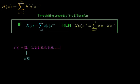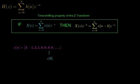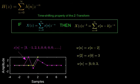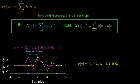Let's begin with the signal x of n in which x of 0 is 3, x of 1 is minus 1, x of 2 is 2, and x of 3 is 1, and all other samples in the signal are 0. Now let's define a signal W[n] which is equal to x of n minus 2. Evaluating W[n] for n equal to 0 up to 8 gives the sequence: 0, 0, 3, minus 1, 2, 1, 0, 0. We can see from the plot that this signal W[n] is a delayed version of x of n where the delay is two samples in duration.